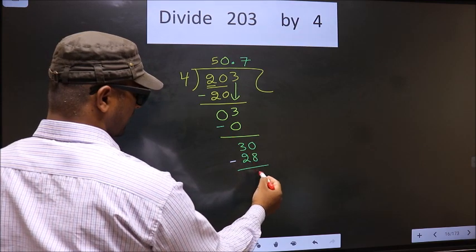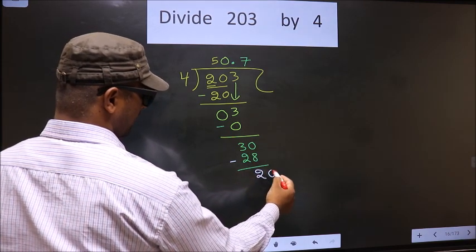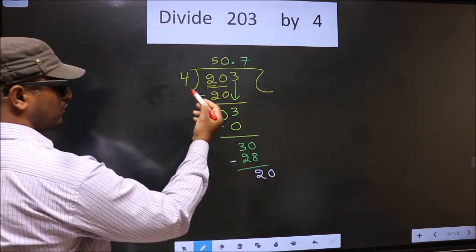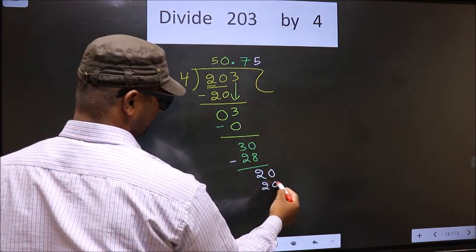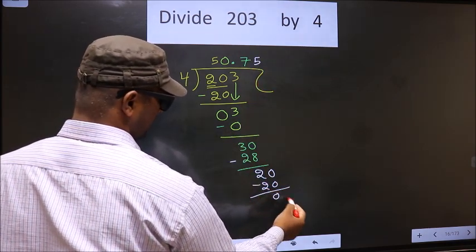Now, you subtract. 30 minus 28 is 2. Now, you take 0. When do we get 20 in 4 table? 4 times 5, 20. Now, you subtract. You get 0.